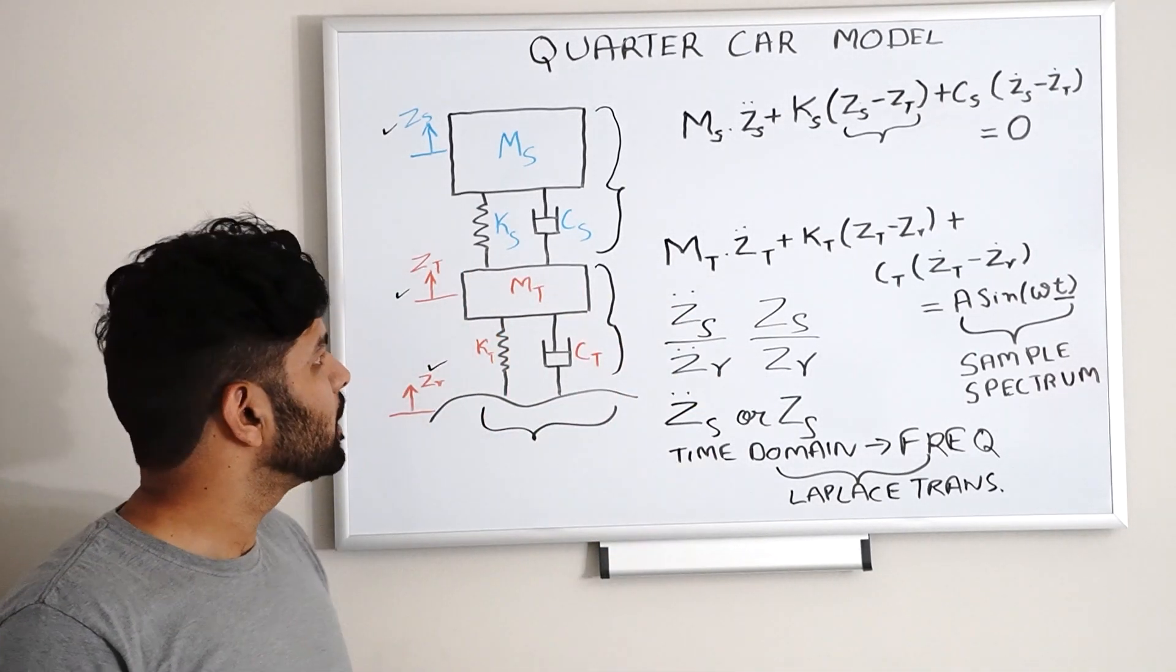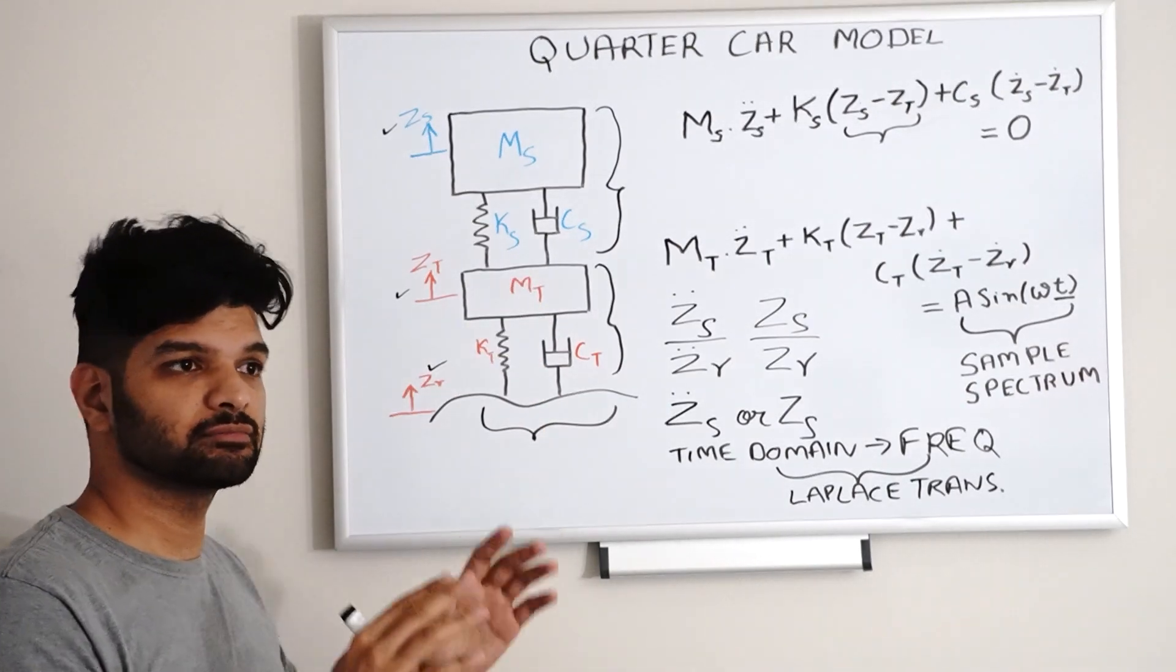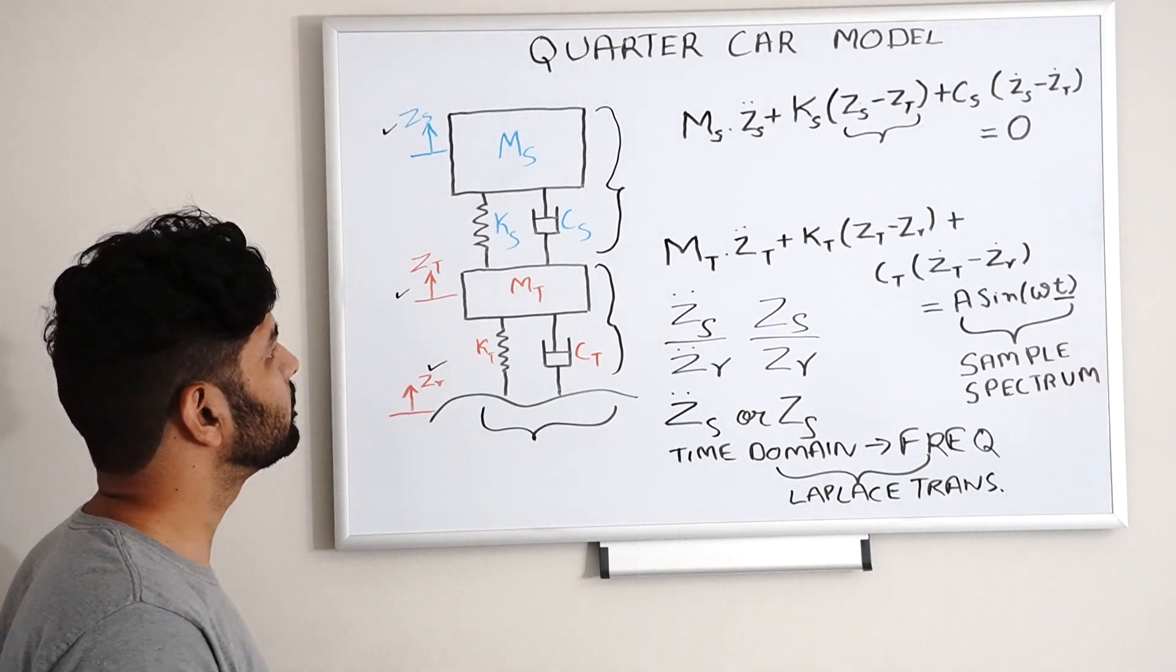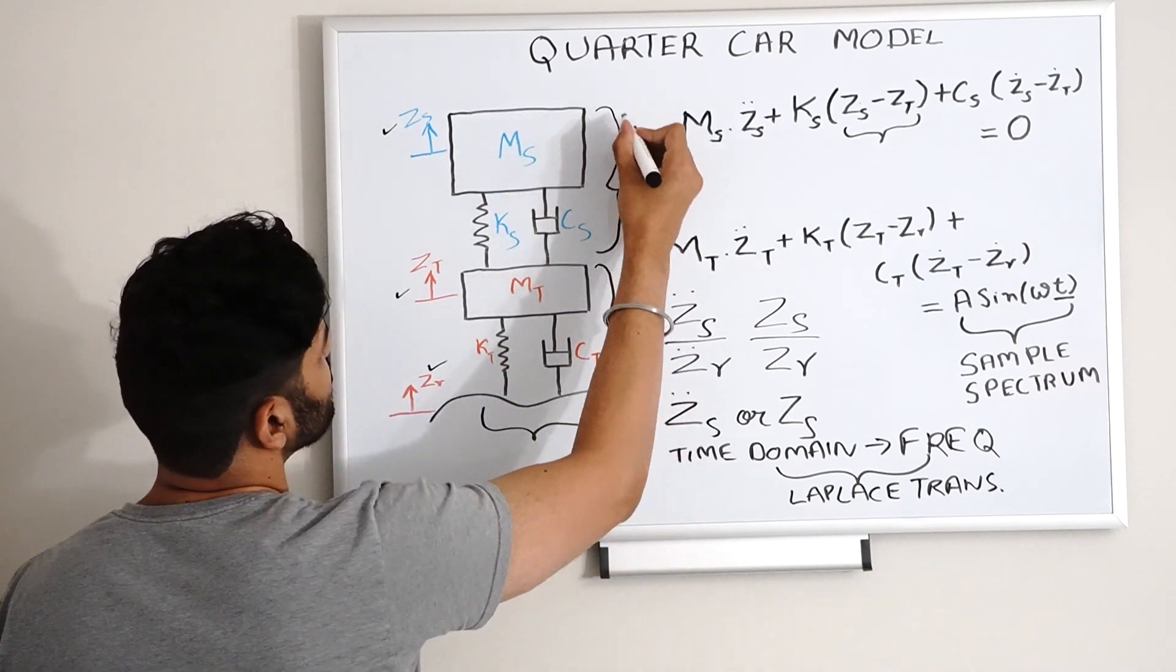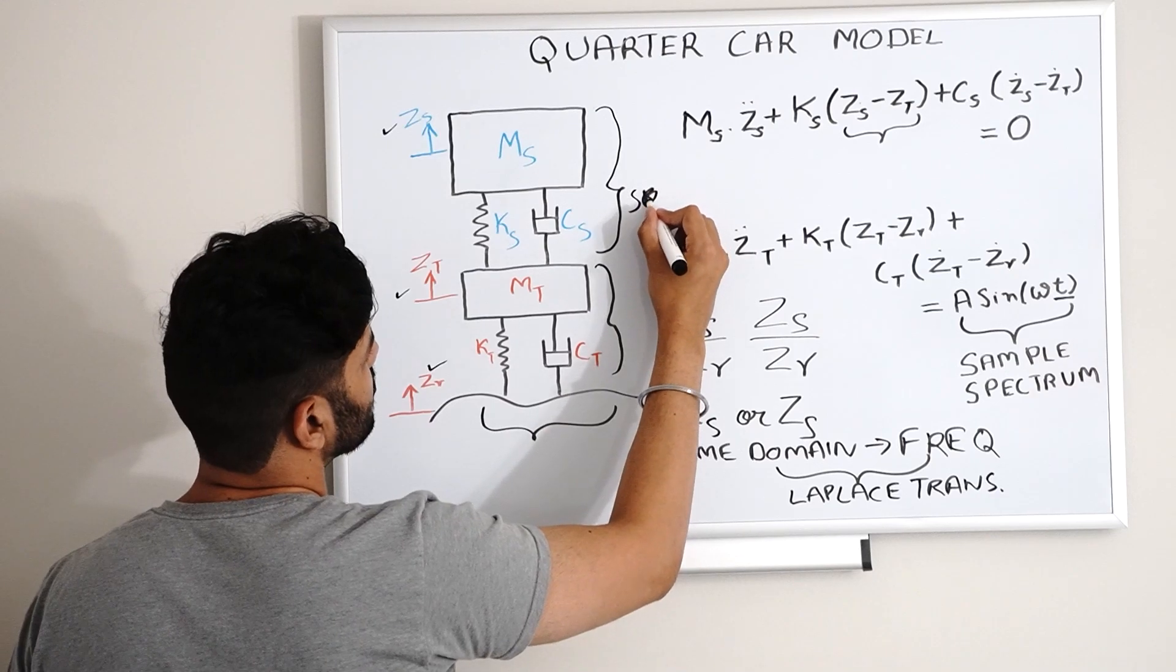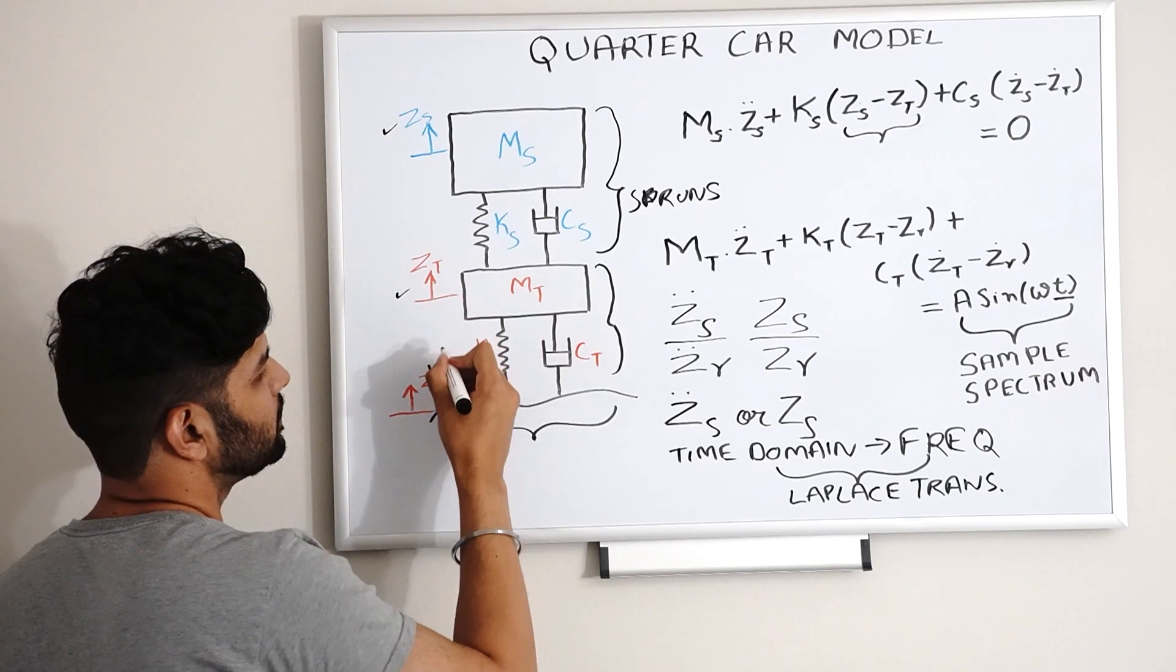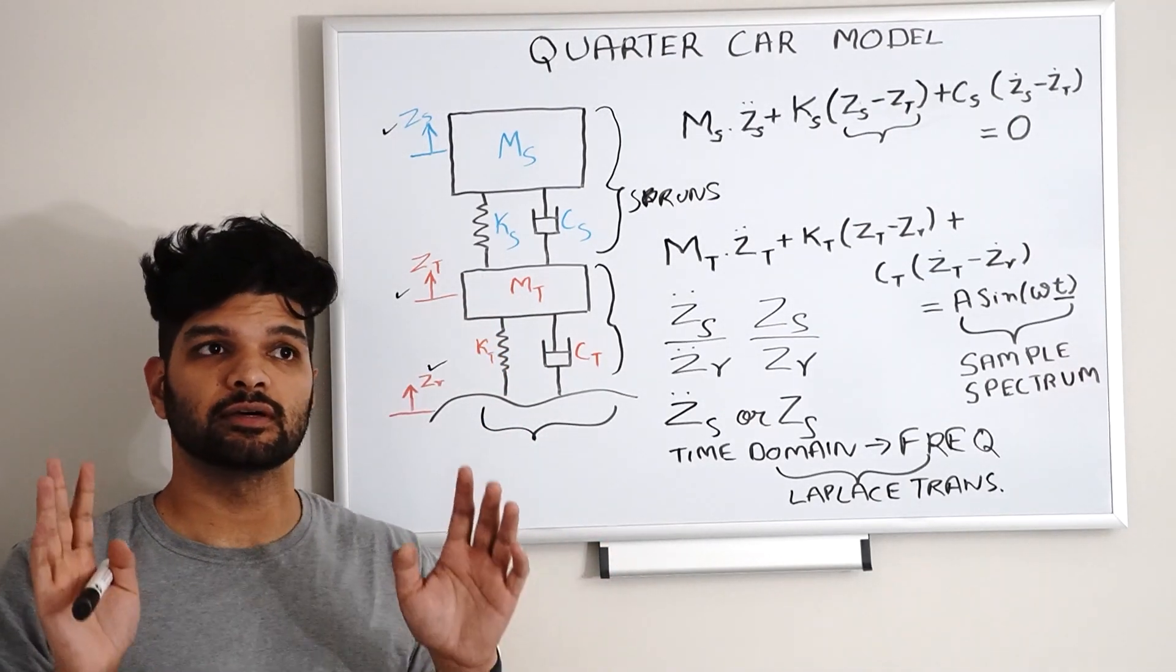As you can look over here, we have lumped parameter analysis, like the basic vibration method. What we have is sprung mass over here in this particular area, and this is unsprung mass over here.